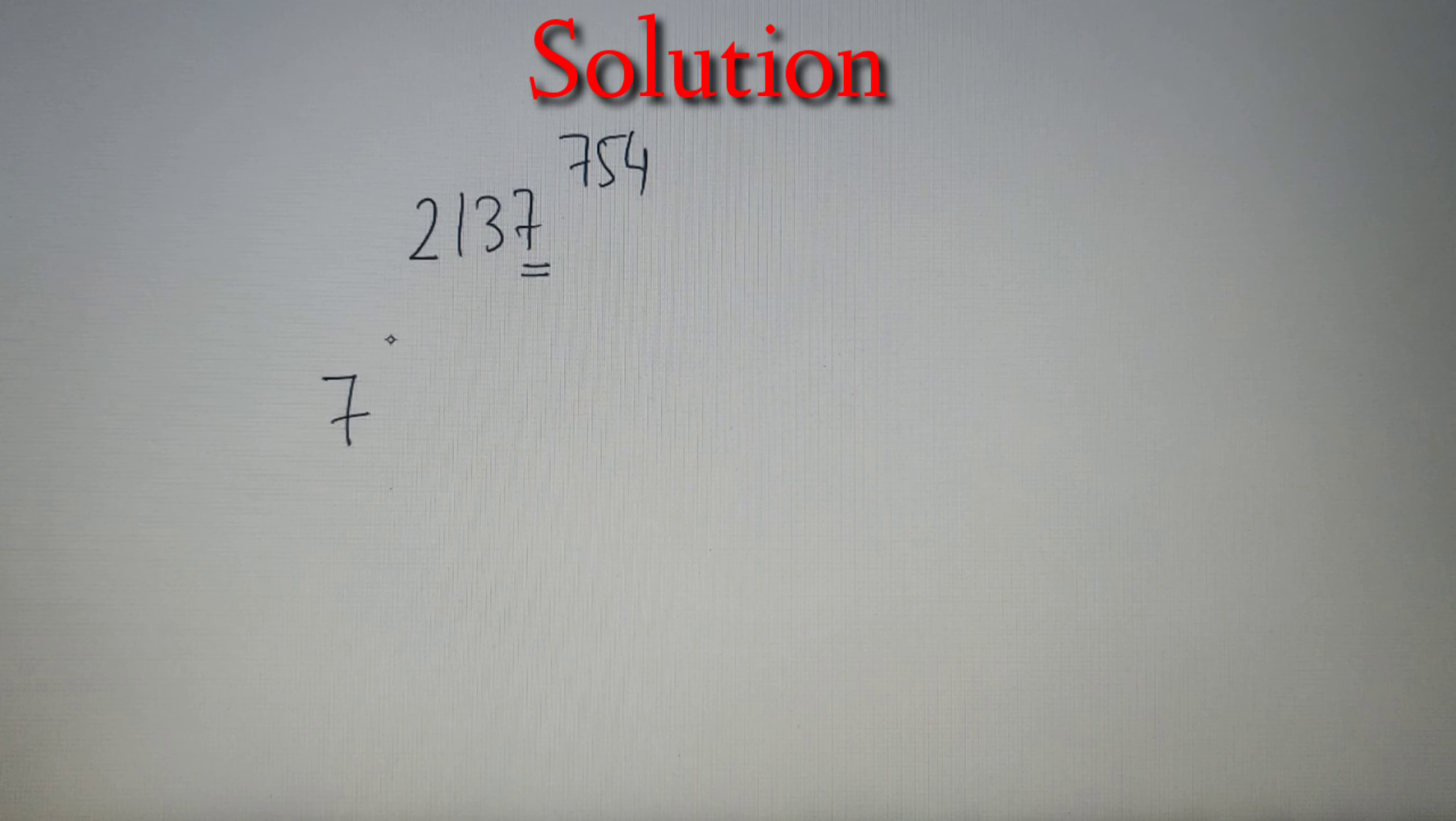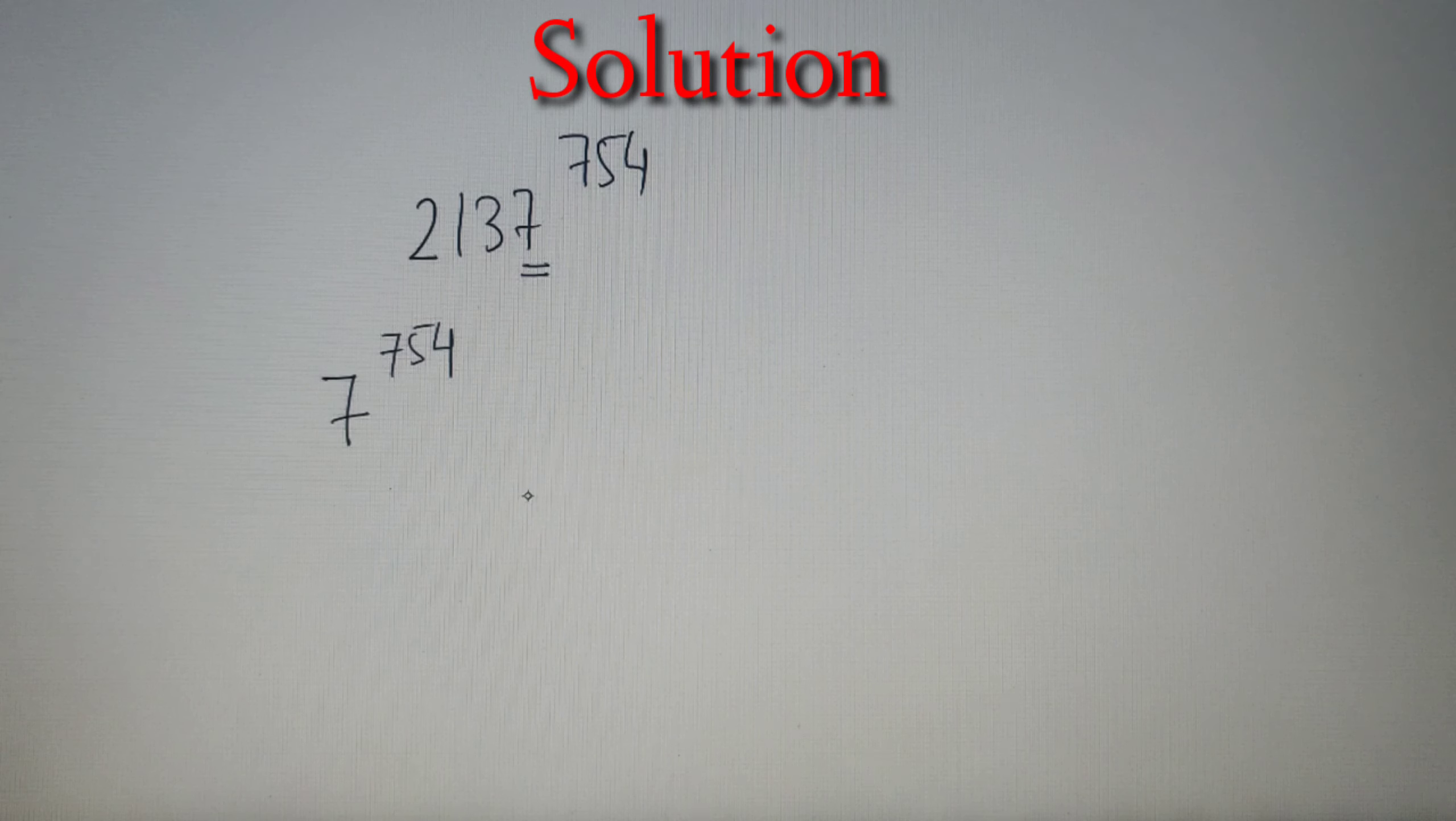So you have to find what is the last digit of 7 raised to the power 754. So to solve such kind of questions what we do is we find the cyclicity of the given number and then divide it with the power and then find the answer.